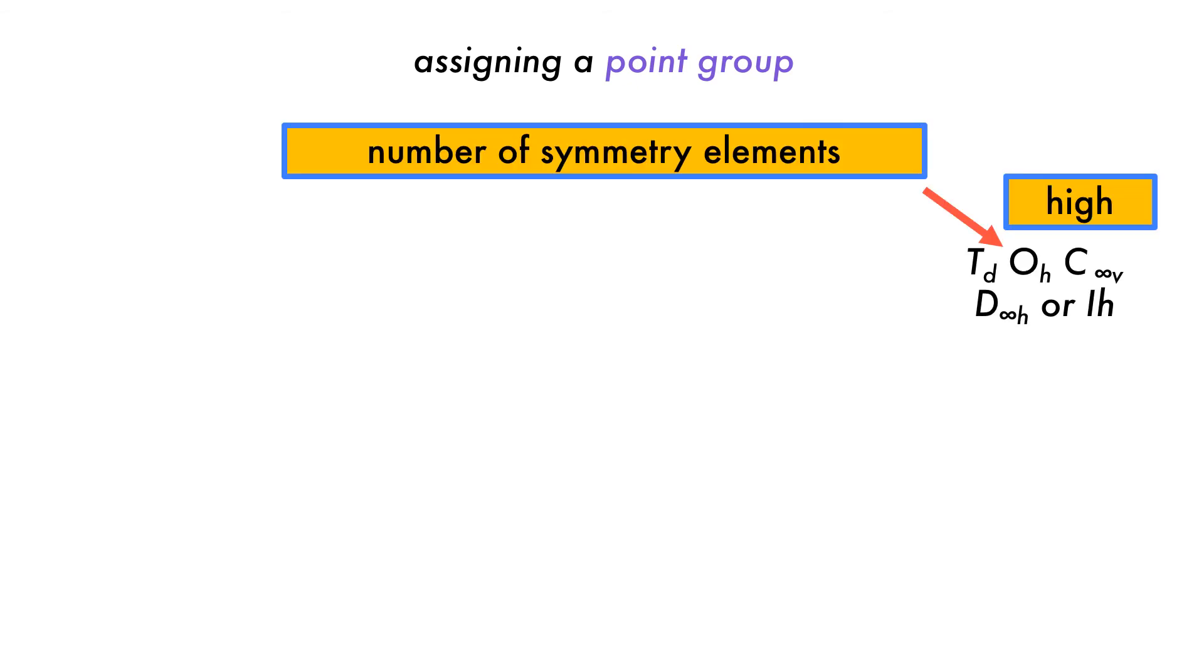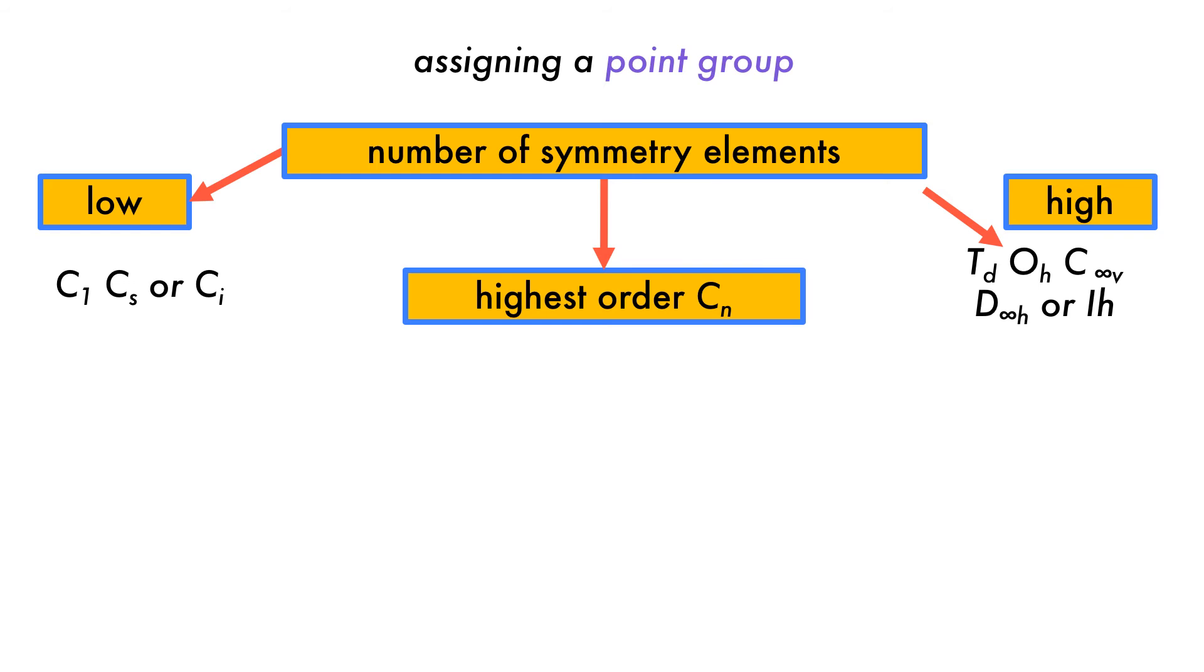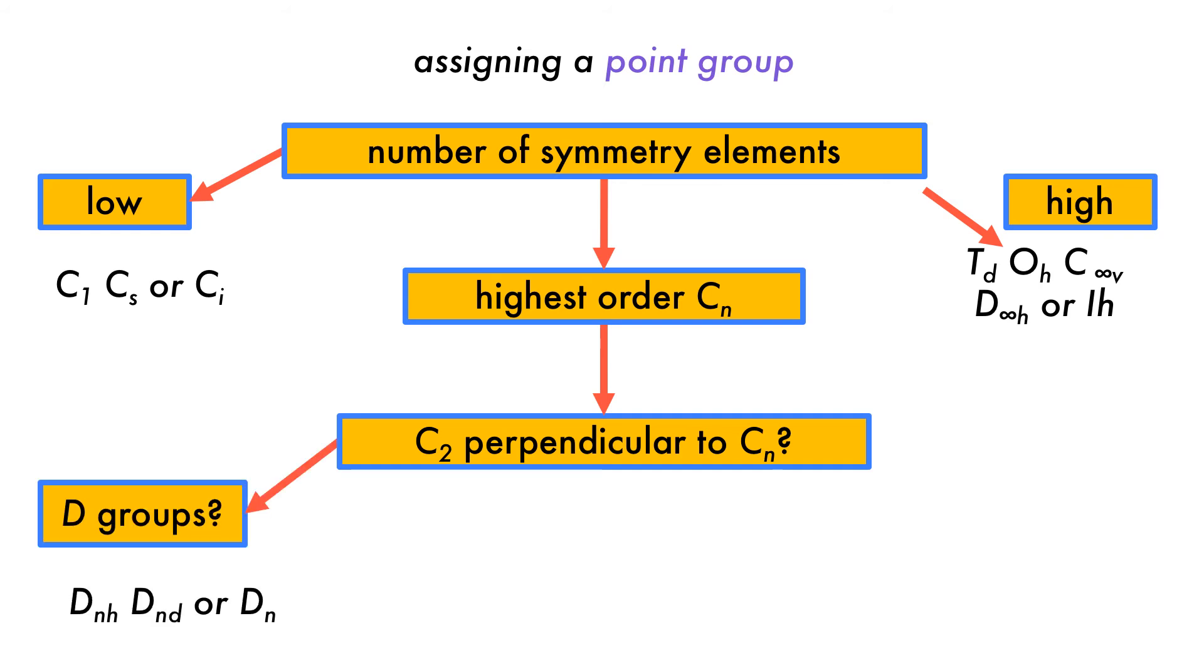Let's review our flowchart again, now that we know a bit more about each question. Point groups can be assigned based on six questions about the molecule's geometry. First, we ask whether or not there are a high or low number of symmetry elements. If it has neither, then we need to ask what the highest order rotational axis is and take note of it. Following this, we need to determine if there is a C2 axis perpendicular to this principal axis. If yes, then we have the D groups, and if no, we have the C or S2N groups.